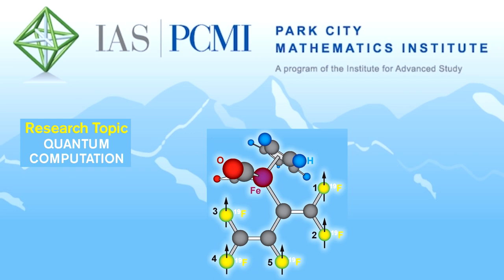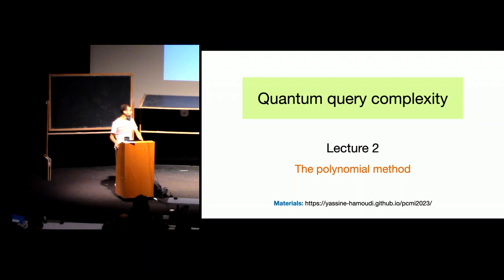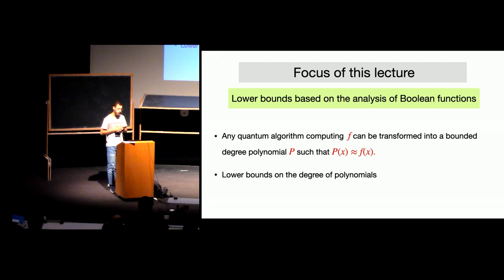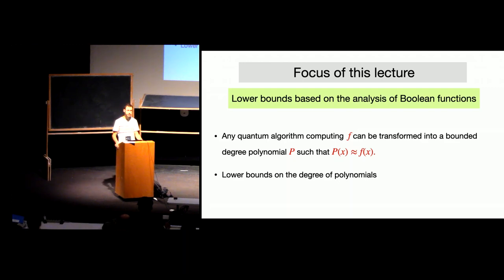The topic of today's lecture is the polynomial method, which is another method for proving lower bounds on quantum query complexity. It was invented shortly after the hybrid method we saw yesterday, and uses very different ideas. The analysis of Boolean functions is something studied even before quantum computing, and we know many techniques to analyze those objects, which will benefit the analysis of quantum query complexity.